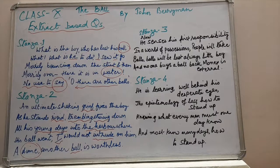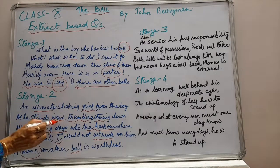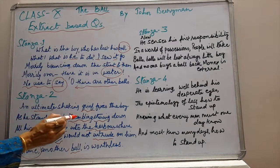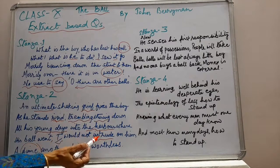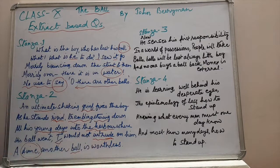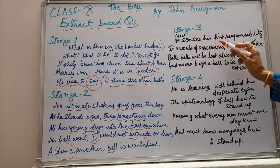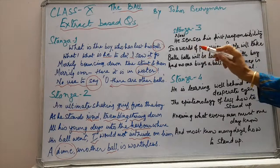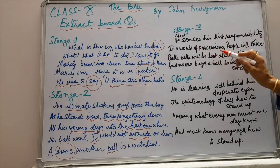You could also get questions like: pick a word which means 'final' — the answer is 'ultimate'; 'motionless' — the answer is 'rigid'; 'trembling' — you might be given 'shaking' and have to pick 'trembling'; 'interfere' — 'intrude' is the word. Stanza 3: 'Now he senses his first responsibility in a world of possessions. People will take balls, balls will be lost always, little boy, and no one buys a ball back. Money is external.'